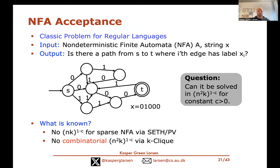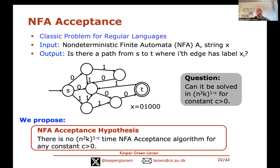So in summary: we probably cannot beat O(n · k) even for sparse NFAs under SETH/OV, and we're probably not going to beat this runtime with a combinatorial algorithm. But what if we run a non-combinatorial algorithm or use fast matrix multiplication cleverly? That's still open. What we propose in this paper is to introduce a new hypothesis — the NFA Acceptance Hypothesis — into the fine-grained hardness landscape, conjecturing that no algorithm can achieve O(n² · k^{1−c}) time.